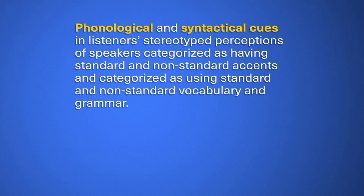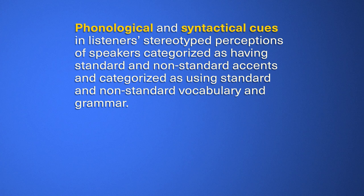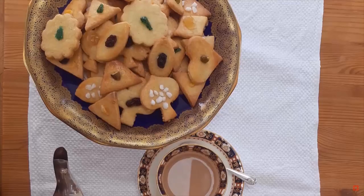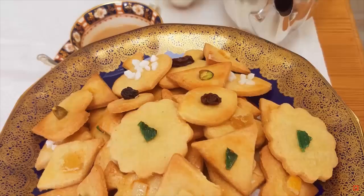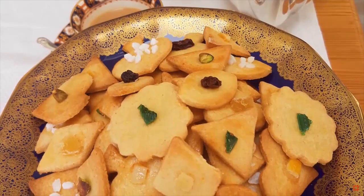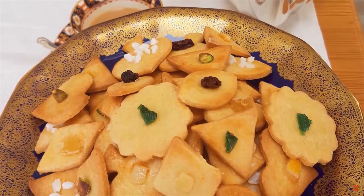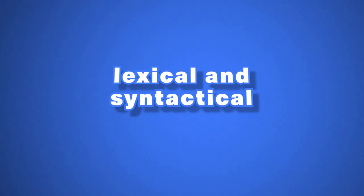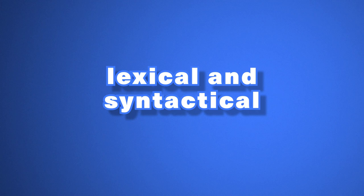These phonological and syntactical differences also come with lexical differences — that's when you know someone is from a certain linguistic group because of the words or expressions they use. For example, if you say 'biscuit' for these, you're likely from the United States. In other Englishes, these are biscuits, which are called cookies in the United States. In this video, we'll consider lexical and syntactical differences together as expressions of grammar to simplify things.